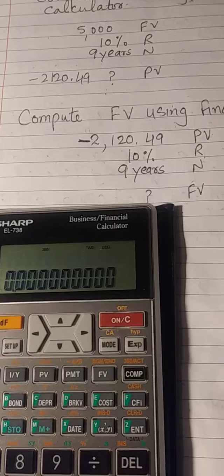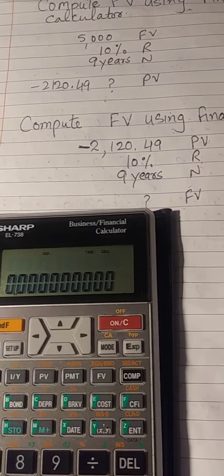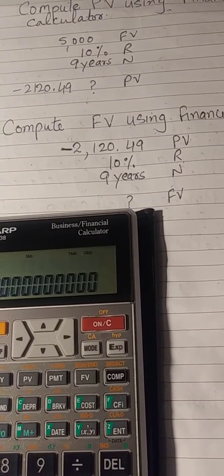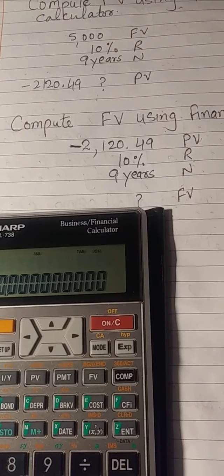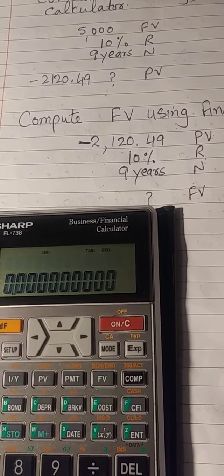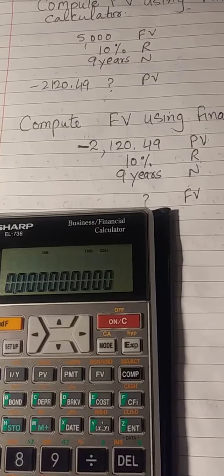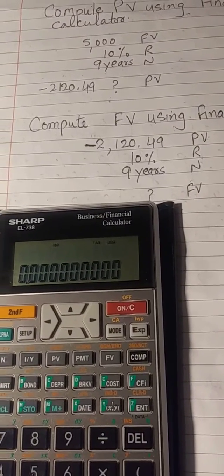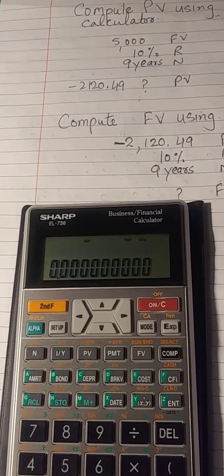The rate is the same, time is the same. Let's see using 2120.49 as a present value if we can get 5000 as a future value using the financial calculator. My financial calculator is a Sharp EL738, so let's do it.